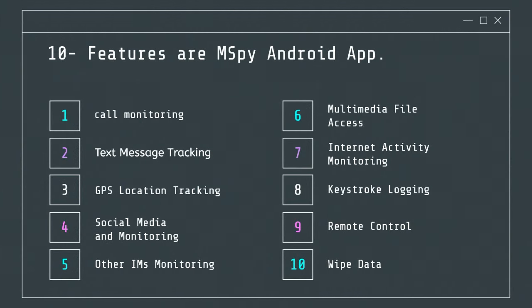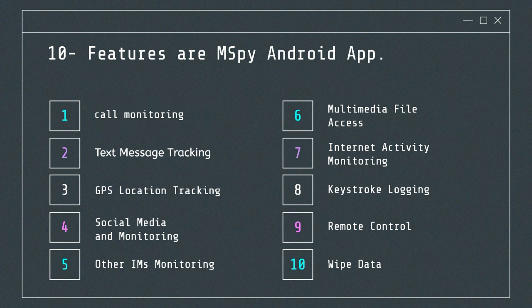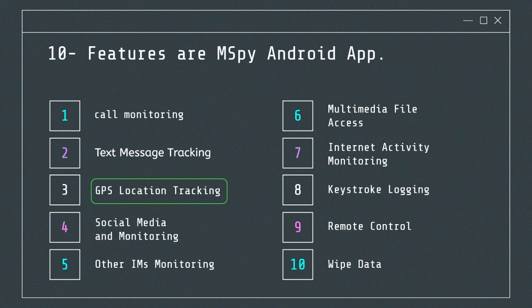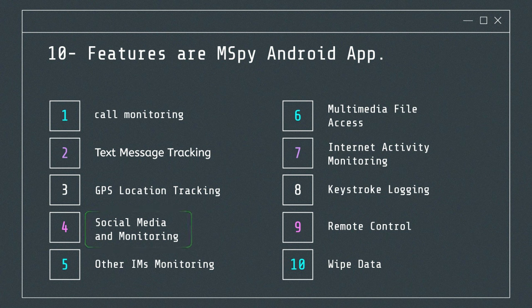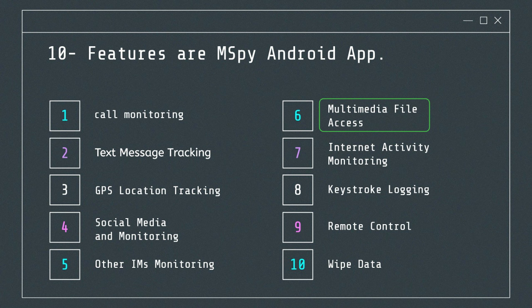mSpy Android key features include: Call monitoring — view call log details and record phone calls. Text message tracking — read all sent and received text messages and access multimedia messages. GPS location tracking — track the real-time GPS location of the device. Social media monitoring — monitor WhatsApp messages including group chats and media files, track messages on Facebook Messenger, access Snapchat messages and media, and monitor direct messages on Instagram. Other IMs monitoring — support for Viber, Skype, Line, Telegram, etc. Multimedia file access — view all photos, videos, and audio recordings stored on the device.